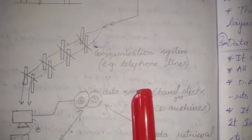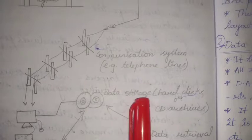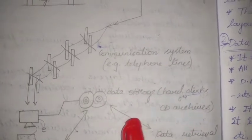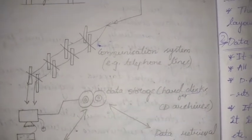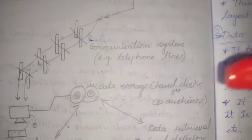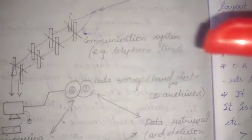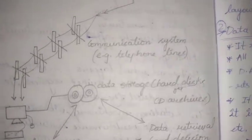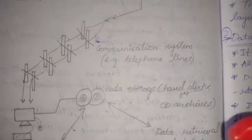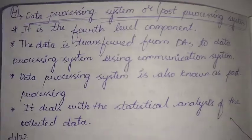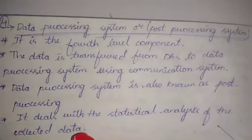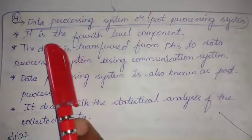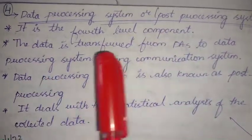The third component is communication systems. The data is transferred via other systems — it can be via radio frequency systems, telephones, internet cables, or towers.